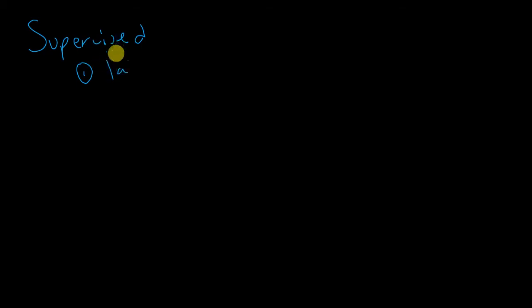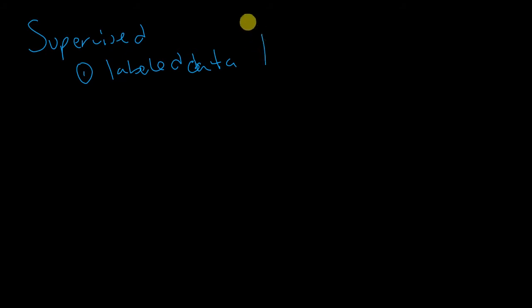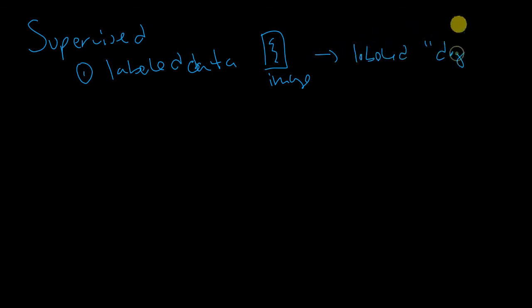Certain things I want you to think of when you hear supervised: we're dealing with labeled data. What does that mean? It means that if I'm dealing with one example — say I have a picture of an animal — I'm going to have my image and it's going to be labeled 'dog' or the species, whatever it's going to be. So I have labeled data so that the system will know, when it's training, what the input and output match-up is — what is right and what is wrong, essentially.